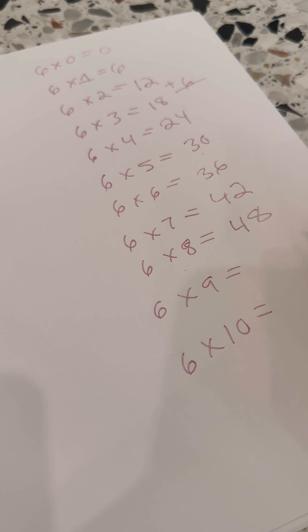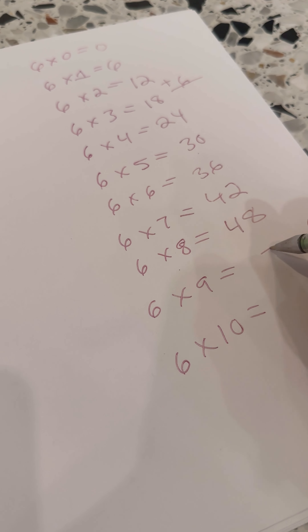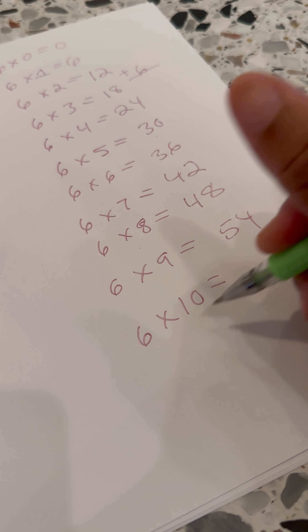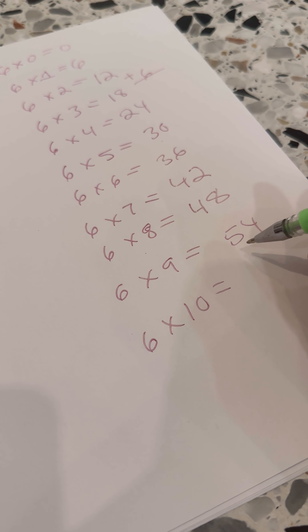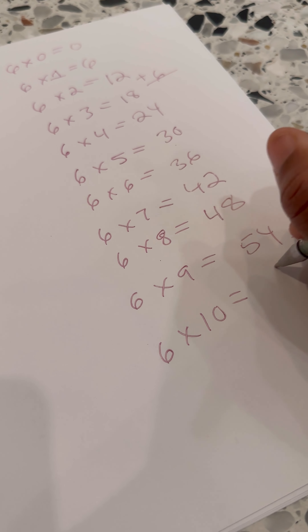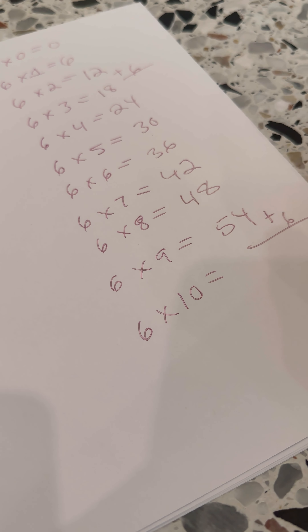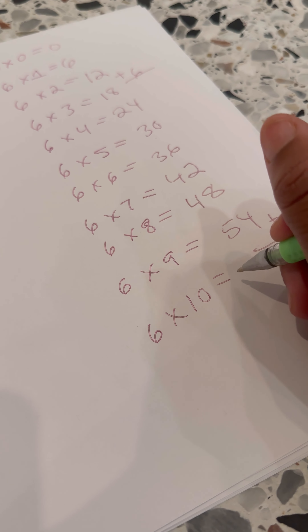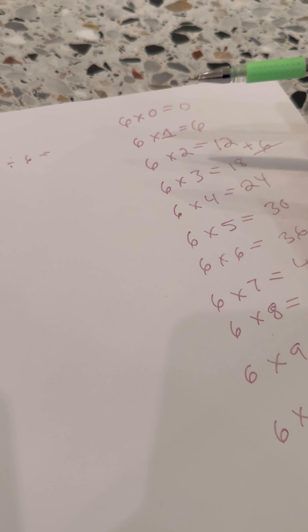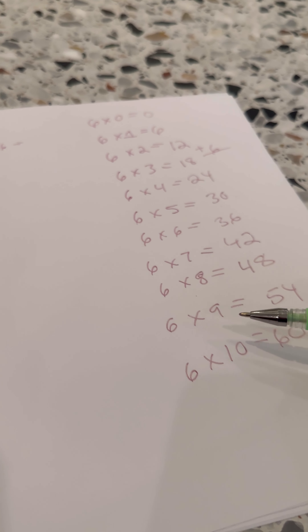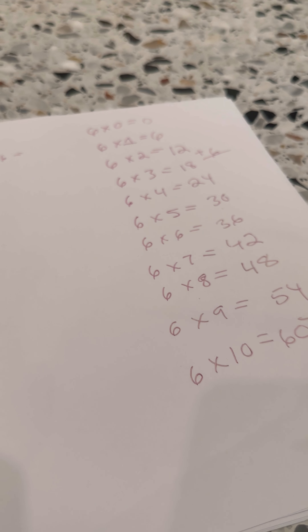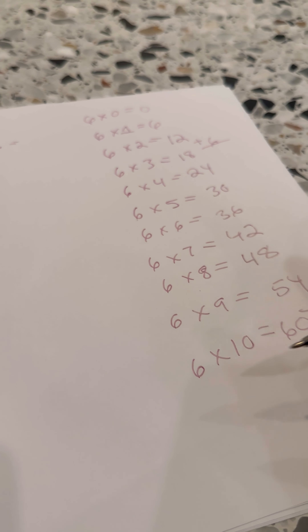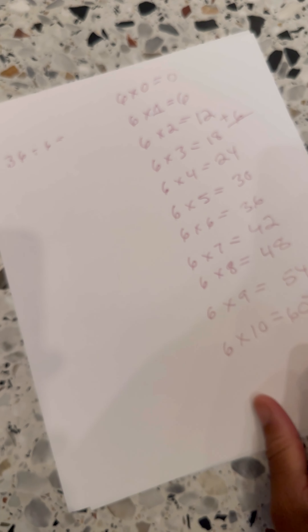What's 6 times 9? 54. And then what's 6 times 10, a.k.a. add 6 more to 54? He said, Mom, that's a baby question — anything times 10 is so easy, just add a 0: 60. So now he knows his multiplication of 6s from 0 to 10. It will be easier to teach division if your kid understands multiplication.